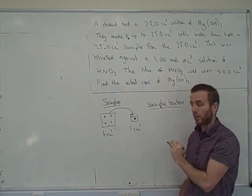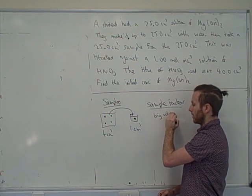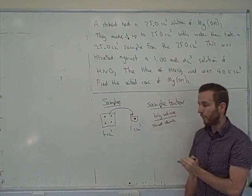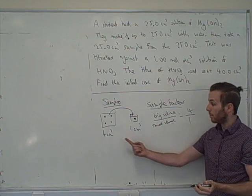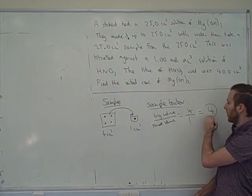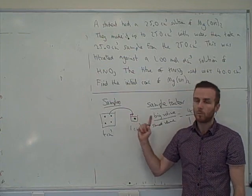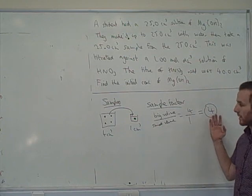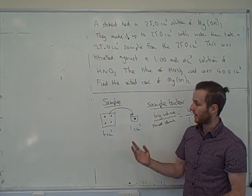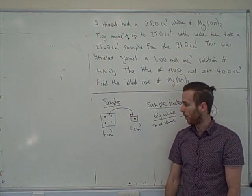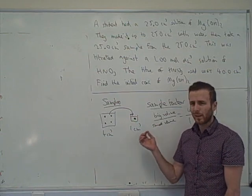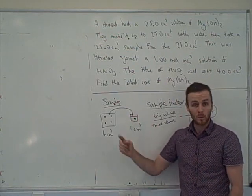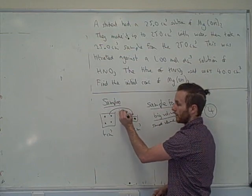What you've just figured out is the sample factor. The sample factor is simply the big volume divided by the small volume. Here it's 4 divided by 1, which equals 4. Between these two beakers we have a difference of a factor of four. If you have a smaller volume you'll have fewer moles, so to get from the big beaker to the small one, you divide by four.